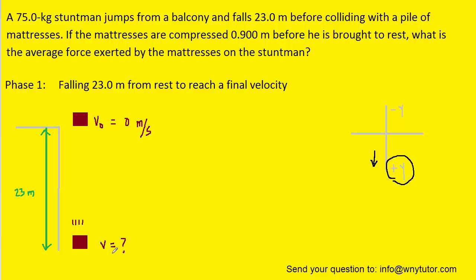Now we can easily calculate the final velocity of the stuntman by using the following equation from kinematics. Notice that because the initial velocity is zero, this term here will cancel out of the equation so we can simplify it. We can then take the square root of both sides of the equation so that we can solve for v.